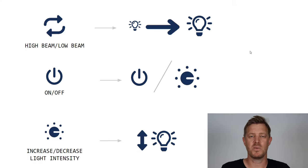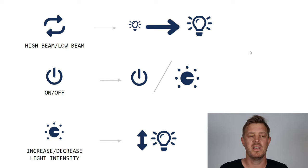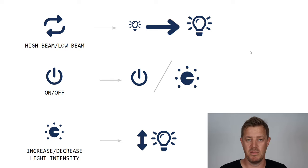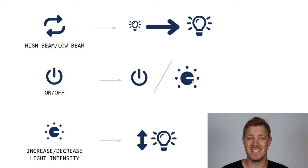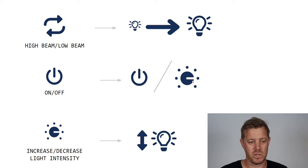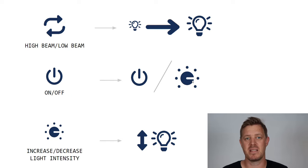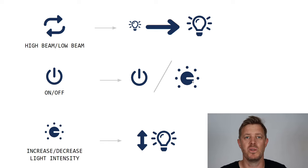Looking at my switch, I'm not sure exactly what to do right now, but essentially we need to switch between high beam and low beam — that's pretty important. We obviously need to go on and off, and we could do that with a switch or a dial, and then we can also increase and decrease light intensity. You don't want to blind everybody coming towards you. Those are the three main things — the base of what we need in our switch to control these new lights.